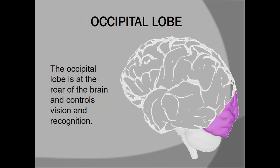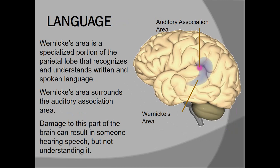The occipital lobe is mainly responsible for vision. Talking about language, we have two areas of the brain that are coordinated properly. First, we have Broca's area, and second, we have Wernicke's area. Wernicke's area is a specialised portion of the parietal lobe that recognizes and understands written and spoken language. Any damage to this part can result in someone hearing speech but not understanding it — that means sensory aphasia.